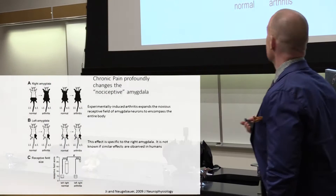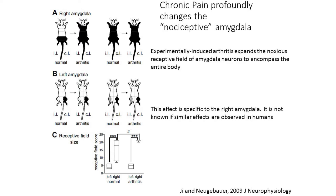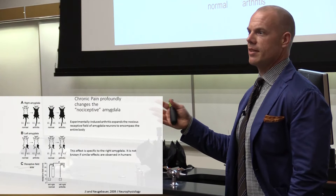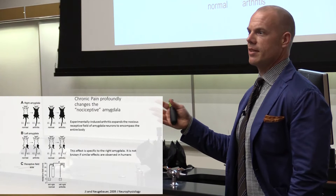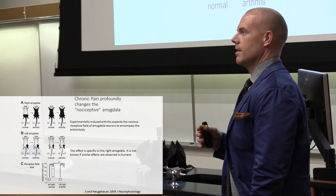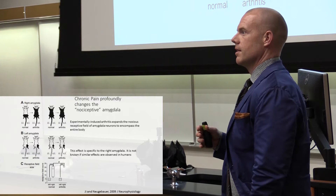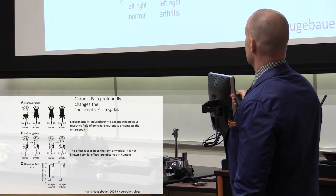But if you give the animal arthritis, that changes the receptive field quite dramatically, and it does it only on one side. The left amygdala shows no change after arthritis, but on the right side the receptive field of the neuron changes from a defined part of the body to the entire body — a very dramatic plasticity. Why this happens only on the right side is not well known, but in all animals studied so far, the right central nucleus of the amygdala is the nociceptive amygdala. The left side doesn't show plasticity; the right side shows very robust plasticity.